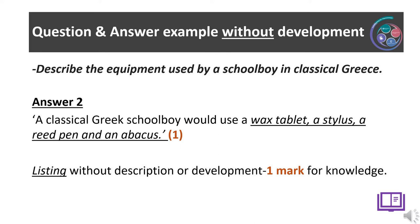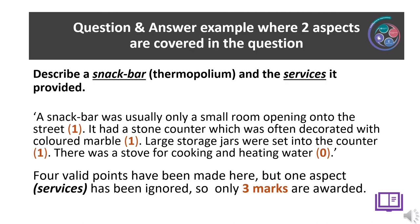Here is the same question with a partial response but without any development. Answer: A classical Greek schoolboy would use a wax tablet, a stylus, a reed pen and an abacus. This would gain the candidate one mark. They have listed various articles used by a Greek schoolboy, but they haven't described or developed their list. They would gain one mark for knowledge shown.